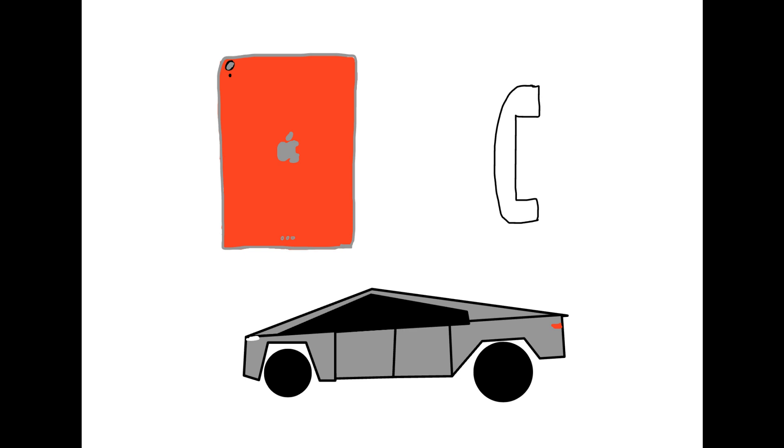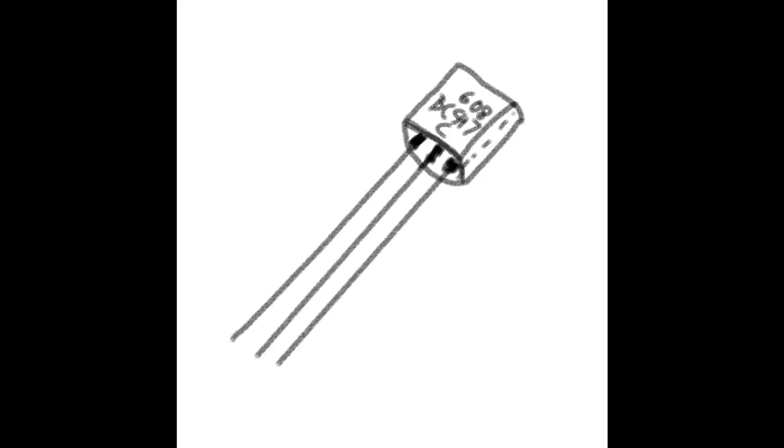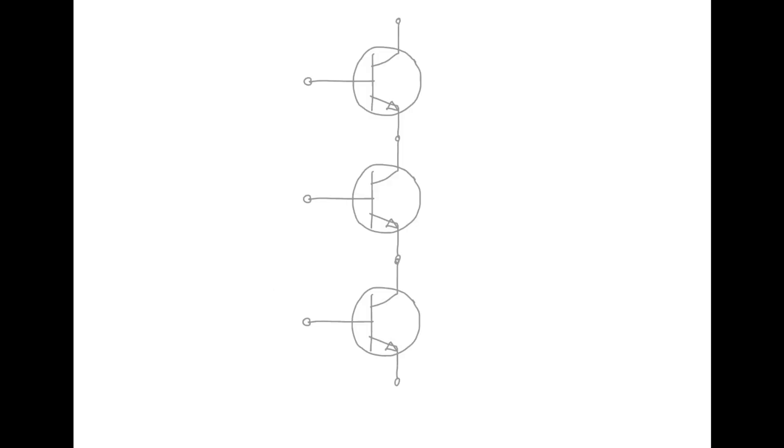Every electronic device we interact with has a computer chip inside. What goes into creating these chips? A transistor is a semiconductor device used to amplify or switch electrical signals and power. By connecting many transistors together, we can create a machine that can do many complex calculations.